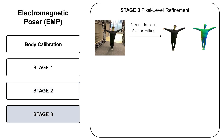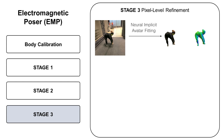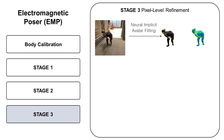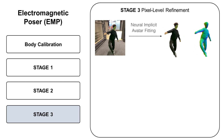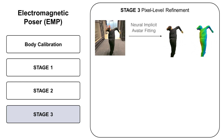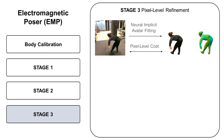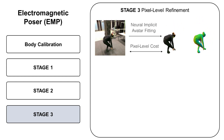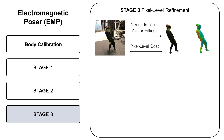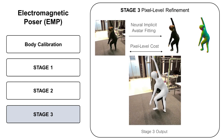In the third and final stage, we refine the SMPL estimates from the second stage by fitting a neural implicit avatar model to reconstruct detailed human surface geometry and appearance. This allows us to formulate a dense pixel-level objective to boost pose-to-image alignment and smoothness.